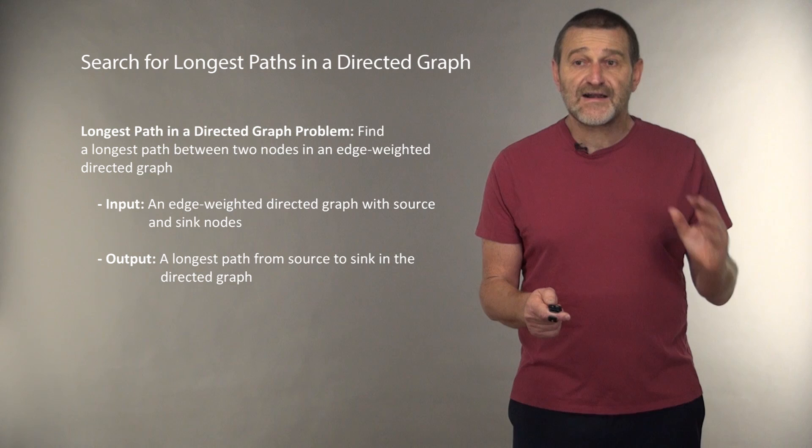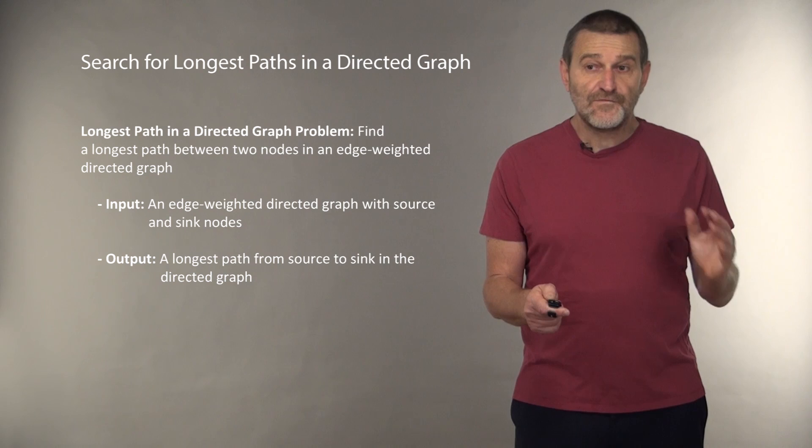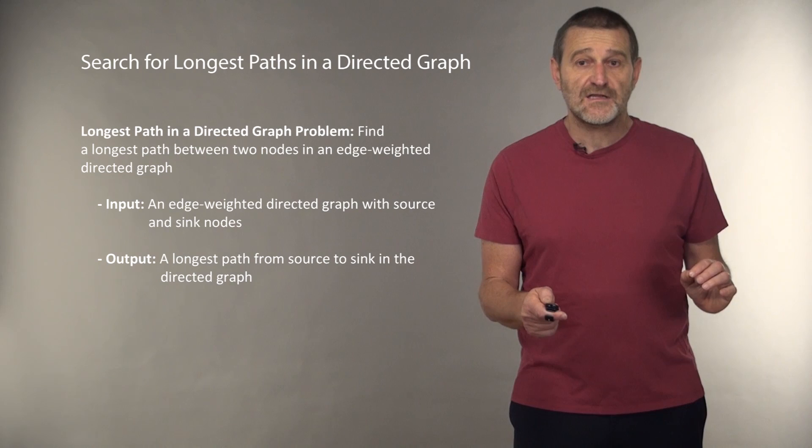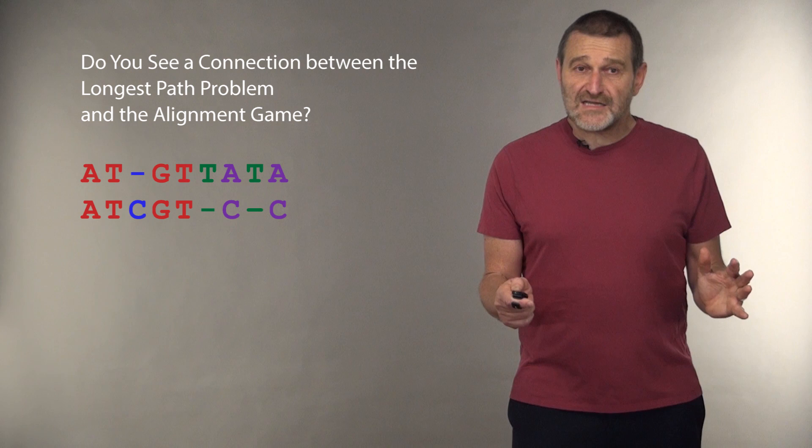And how do we travel in this grid? And to travel in this grid, we need to solve longest paths in a directed graph problem. Where input is an edge-weighted directed graph with source and sink node, and output is simply a longest path from source to sink in this graph.